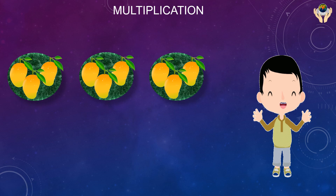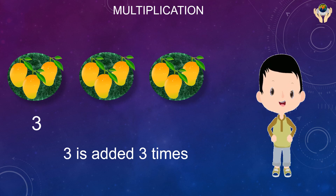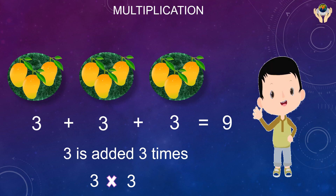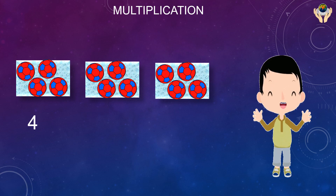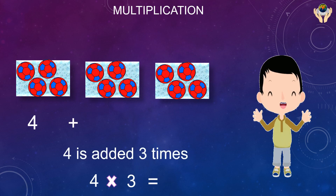Now there are three mangoes in three plates — how many mangoes are there? We have to add three, three times: three plus three plus three. The answer is nine, so three multiplied by three equals nine. Now you can see four balls in three places — we have to multiply four by three, adding four repeatedly: four plus four plus four. The answer is twelve.